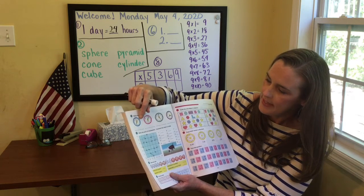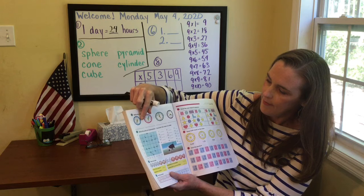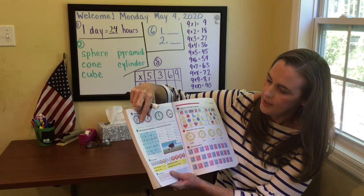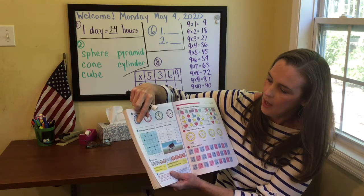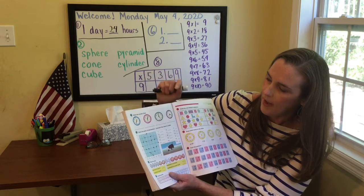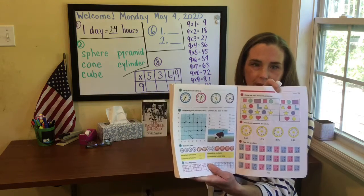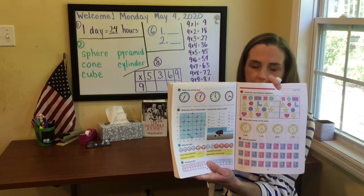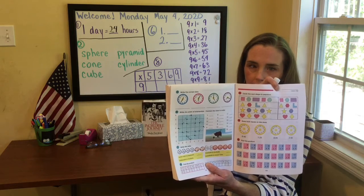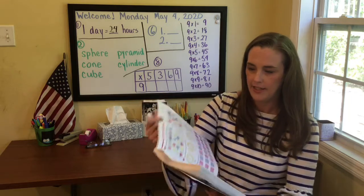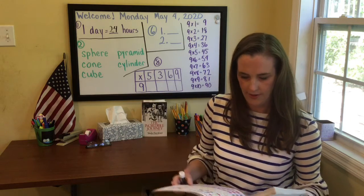5, 10, 15, 20, 25, 30, 35. That means it's 12:35 right there on that first clock. Just to kind of get you in the groove with your time.